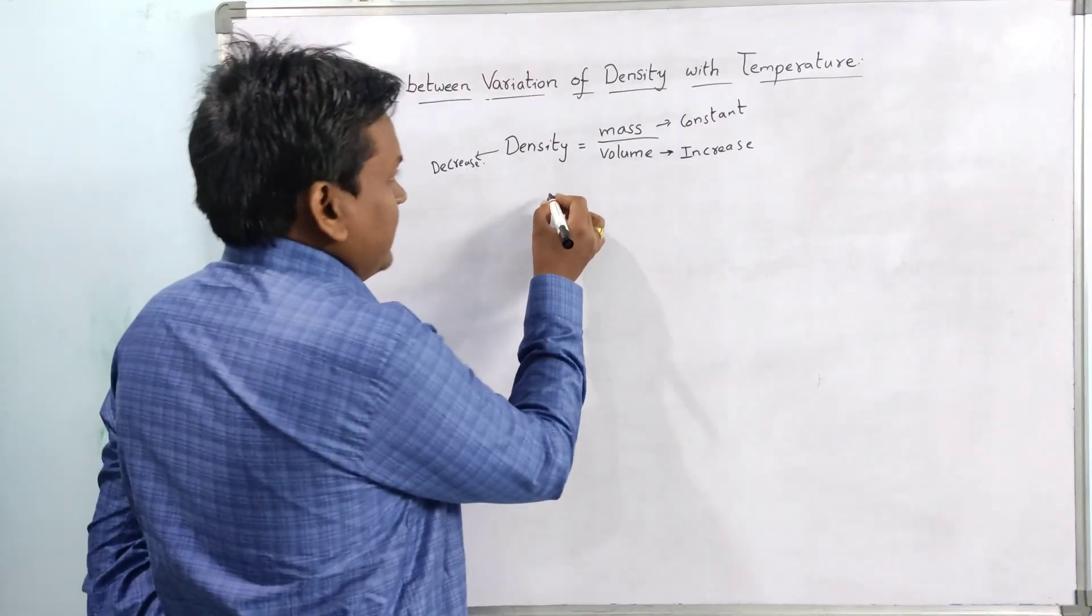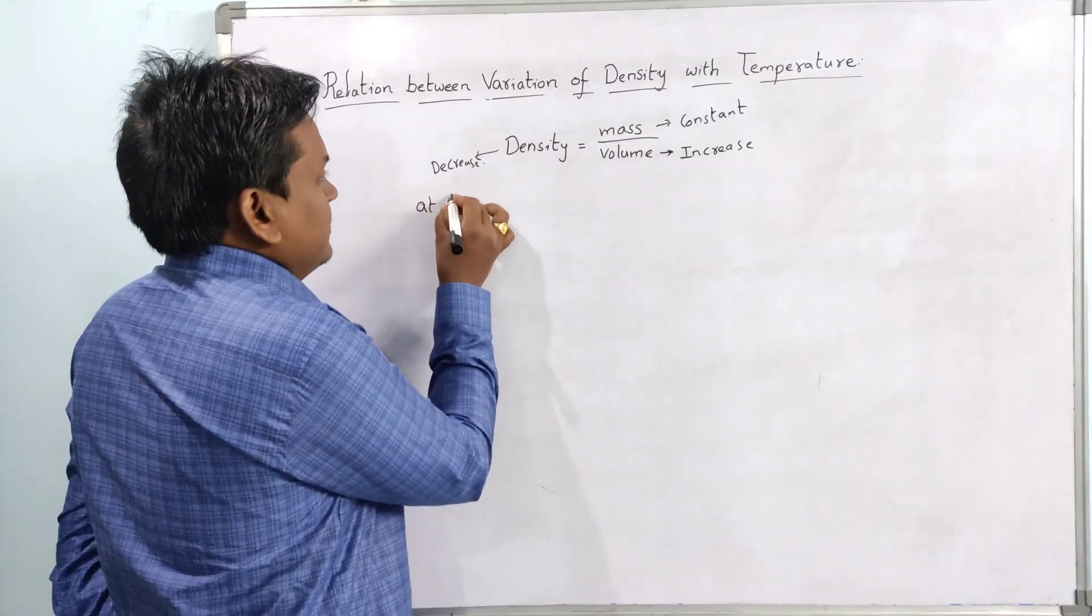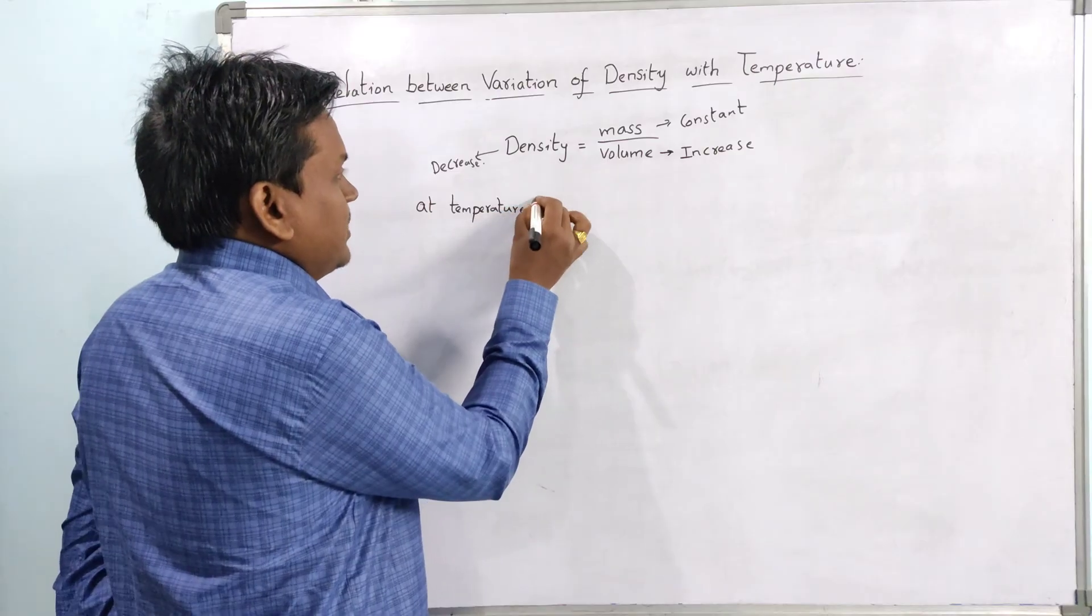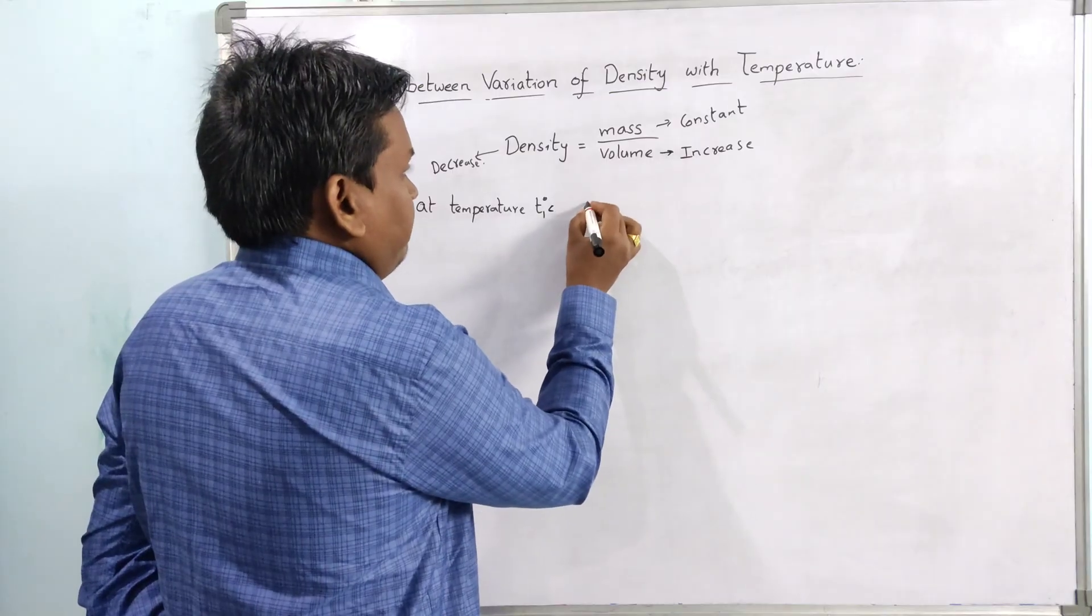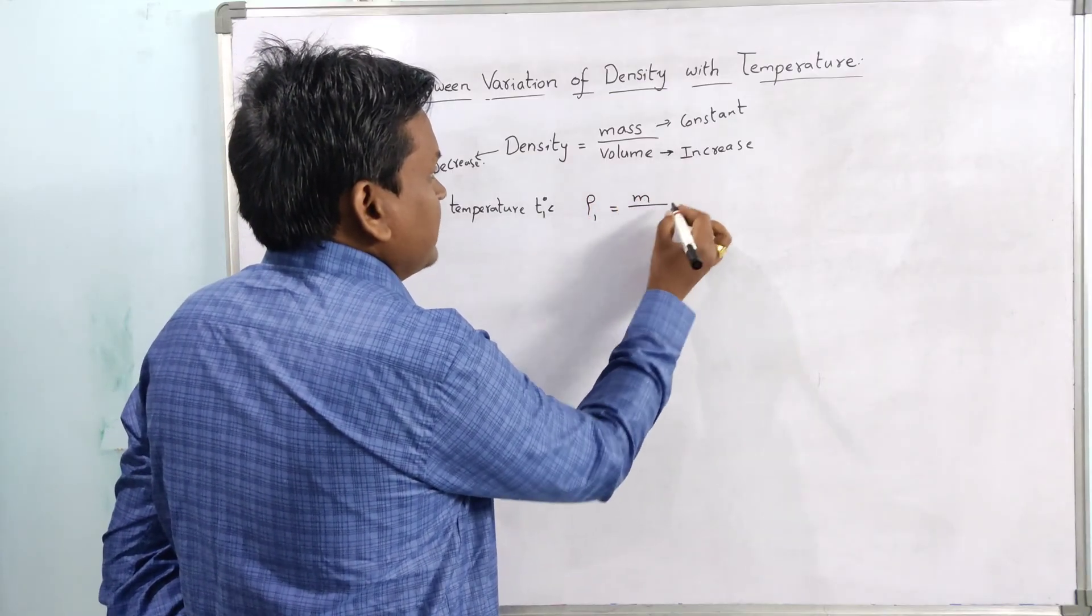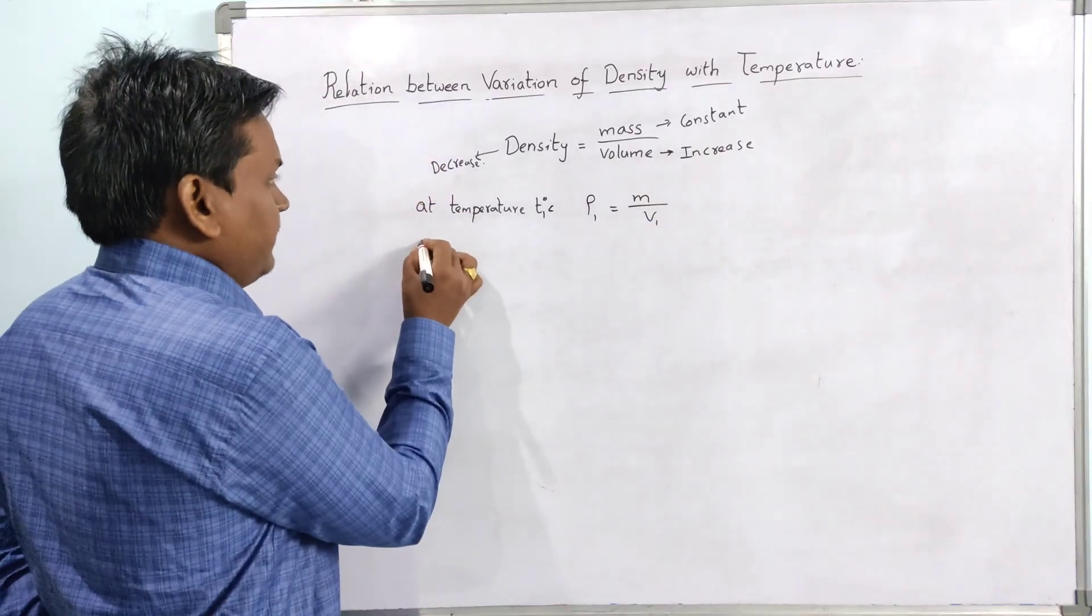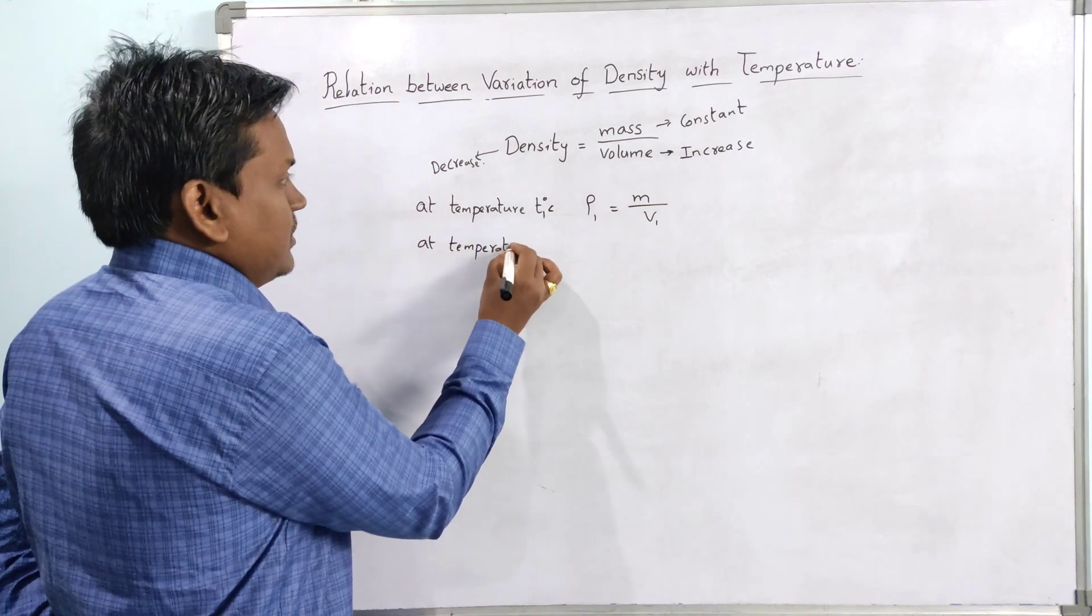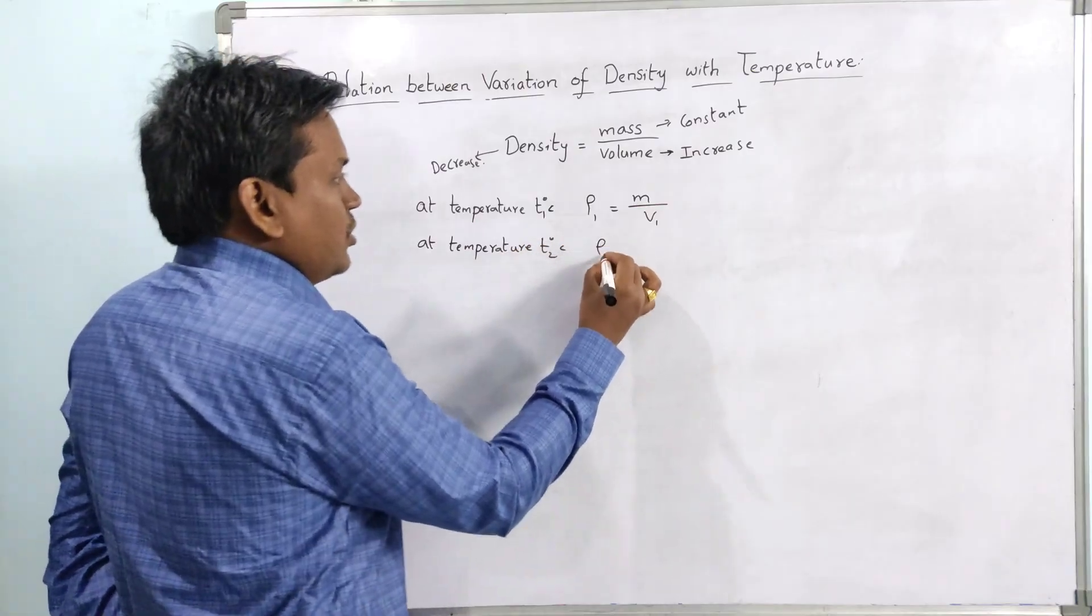At temperature T1 degrees Celsius, rho 1 equal to mass m by volume v1. In the same way, at temperature T2, rho 2 equal to m by v2. As mass is constant, mass will not change, but the variations will be in between this volume and density.